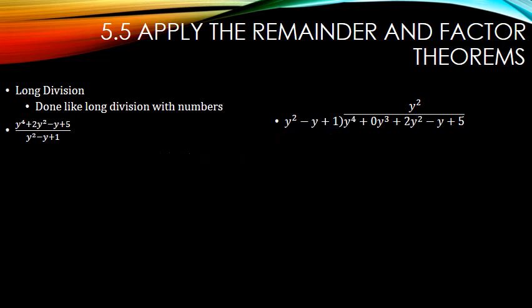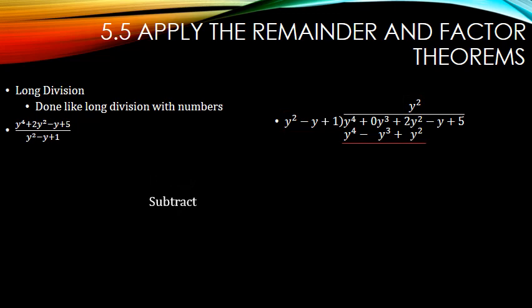Then you multiply. We have y squared times y squared minus y plus 1. y squared times y squared is y to the fourth. y squared times negative y is negative y cubed. y squared times 1 is y squared. Then we subtract. y to the fourth minus y to the fourth is nothing. y cubed minus negative y cubed becomes plus, giving us y cubed. And 2y squared minus y squared is y squared.